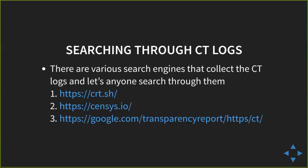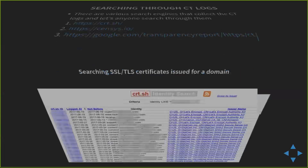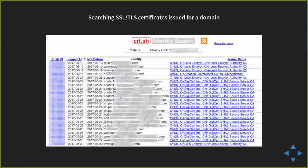You can search CT logs using various search engines: CRT.SH by Comodo, censys.io by University of Michigan which aggregates all known SSL/TLS certificates and CT logs, and Google's transparency search. I put a large organization's name in CRT.SH and got around six pages — roughly 400 entries for a single organization. There was Drupal, web team, and a bunch of things including production and staging servers. There's no other way of getting these subdomains except CT logs.